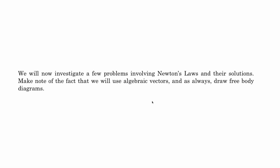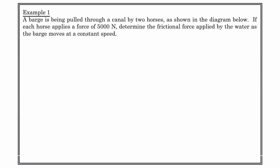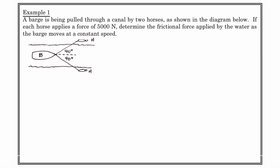Let's take a look at a few problems that involve Newton's laws. We'll look at their solutions and work with algebraic vectors — i-hat and j-hat — to save space and time. We'll always draw free-body diagrams. Here's example number one: a barge is being pulled through a canal by two horses, as shown in this diagram looking at the situation from the top down. Each horse applies a constant force of 5,000 newtons. The barge moves through the water at a constant speed, and we want to determine the frictional force acting on the boat because of the water.